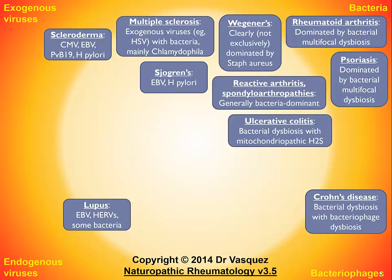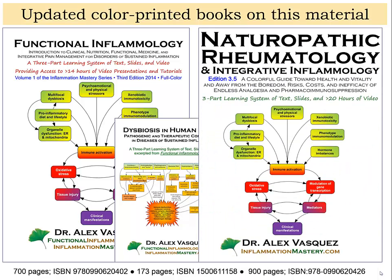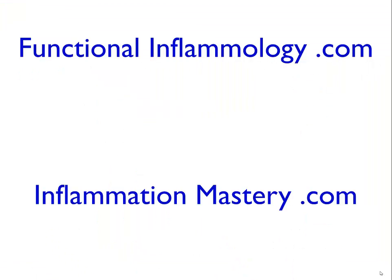This is a way of understanding how dysbiosis can be interconnected, and how different levels, balances, or combinations of dysbiosis can result in different clinical manifestations. All of these are prototypic autoimmune conditions — just different patterns of expression of that underlying dysbiotic and metabolic inflammation. Published in 2014 as Functional Inflammology, excerpted as Dysbiosis in Human Disease, and now most recently updated in Naturopathic Rheumatology 3.5 — please access the complete album of videos, and eventually the full library on the topic of dysbiosis. Thank you, and please stay in touch.